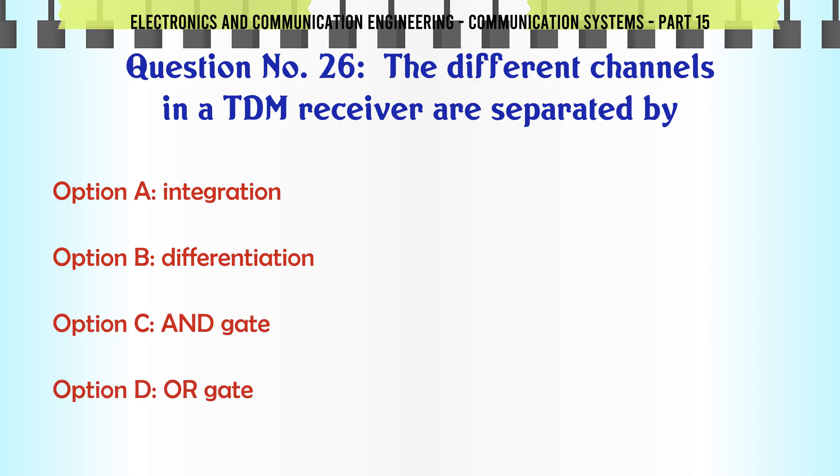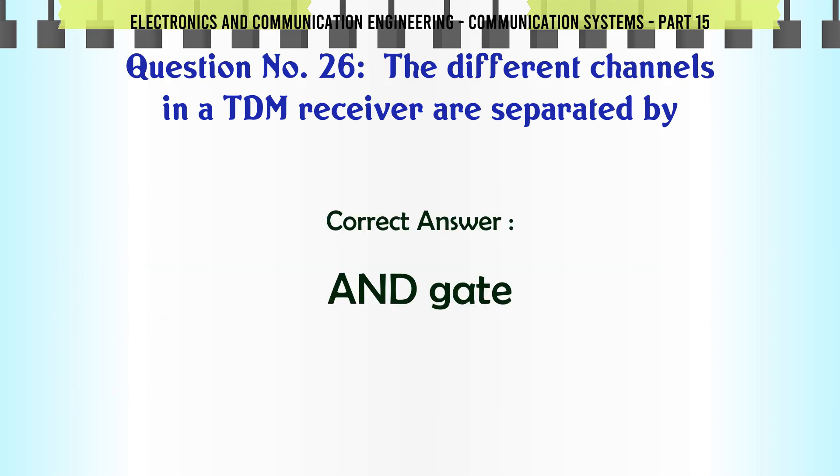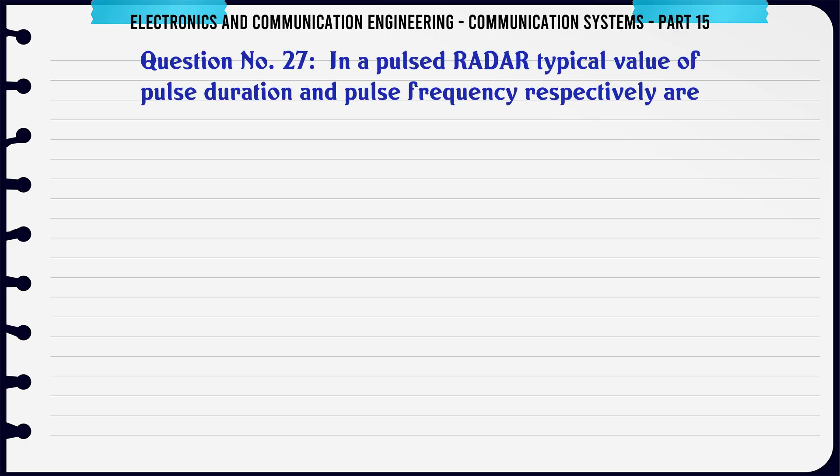The different channels in a TDM receiver are separated by: A integration, B differentiation, C AND gate, D OR gate. The correct answer is AND gate.